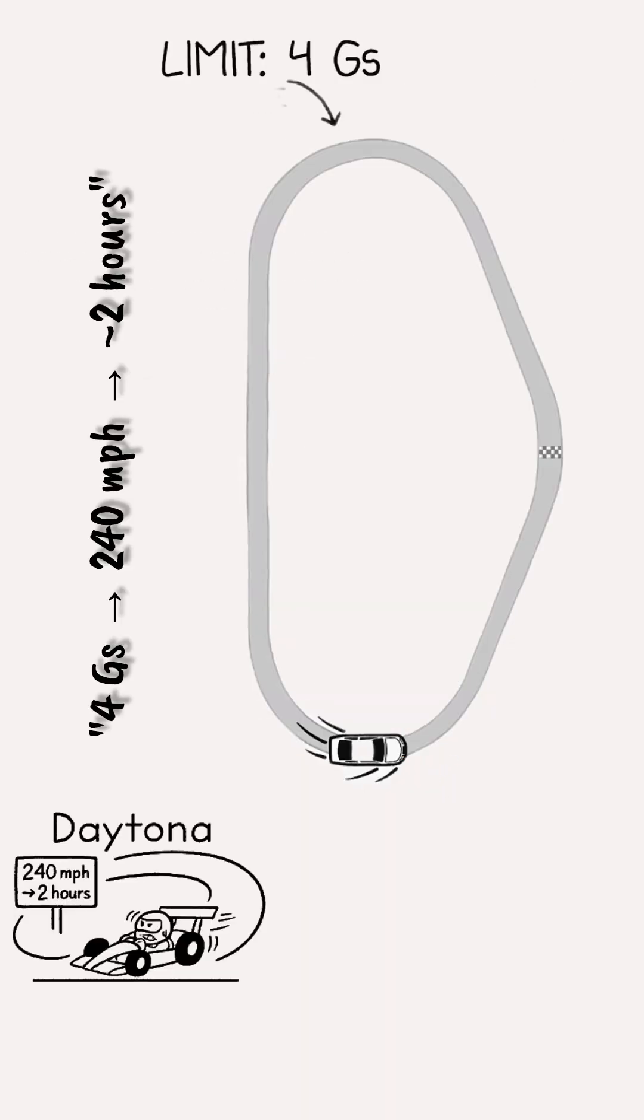If we limit our vehicle to 4 g's, its top speed on the turns at Daytona will be about 240 miles per hour. At this speed, the course will take about 2 hours to complete.